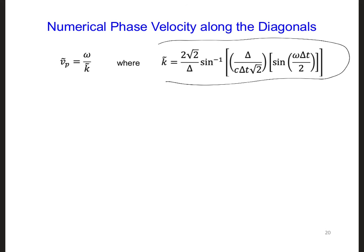So here it is written again. So now go ahead and plug in our values for delta, delta t, and omega in order to calculate the numerical phase velocity along the grid diagonals and compare your answer with the speed of light and also with the numerical phase velocity that we calculated earlier along the grid axis.